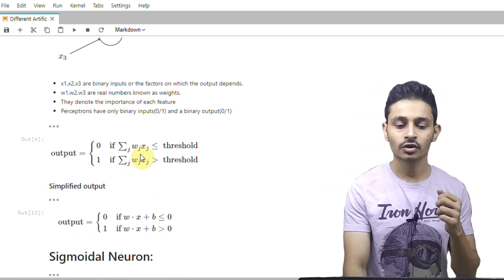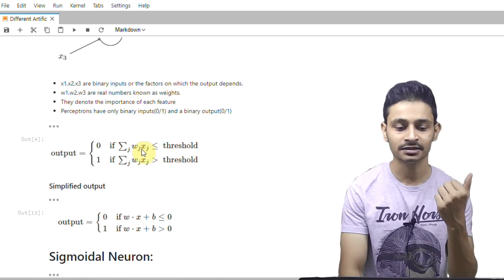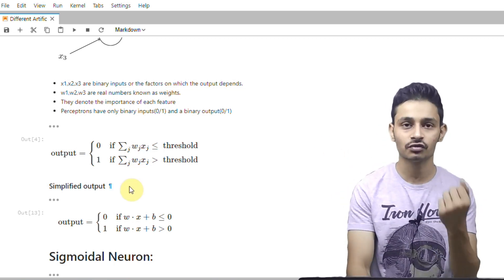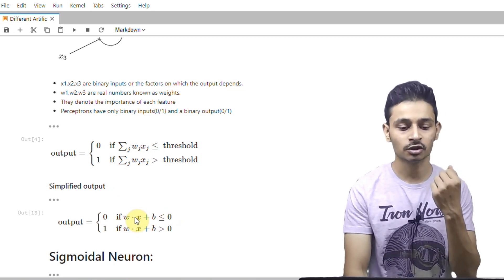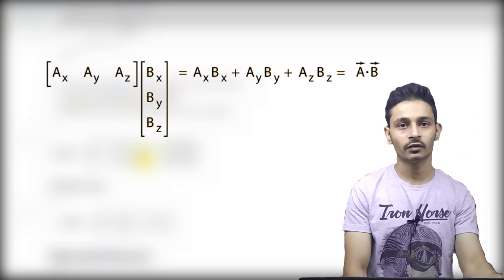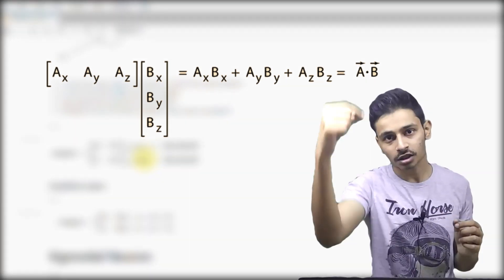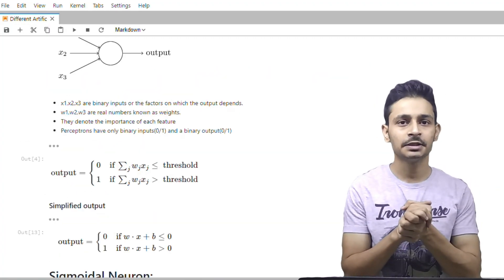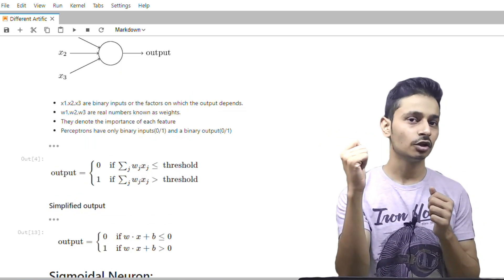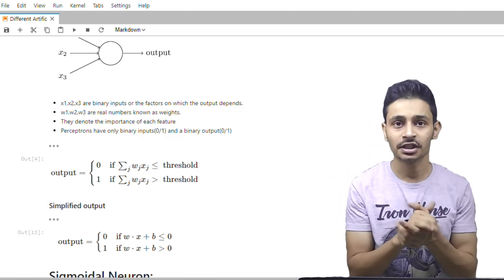Let's change this equation. We have Σwj·xj less than or equal to threshold. Moving threshold to the left-hand side, we get Σwj·xj minus threshold. Considering minus threshold as b, the equation becomes w·x + b ≤ 0, where w·x is the vector representation of Σwj·xj — w is one vector and x is another vector, and their dot product gives a single value. This leads to an interesting and important question: how do we actually get the value of this threshold, that is b, which we call the bias term? And how do we get the weight matrices? Because that's what decides what our output would be — and that's where training of the model comes into picture.